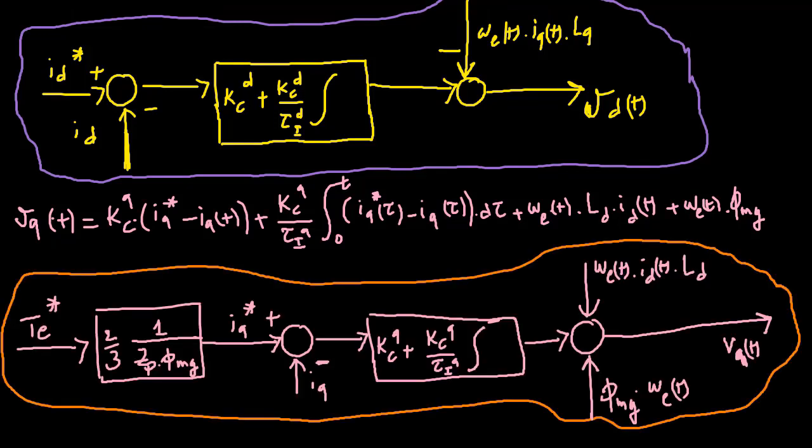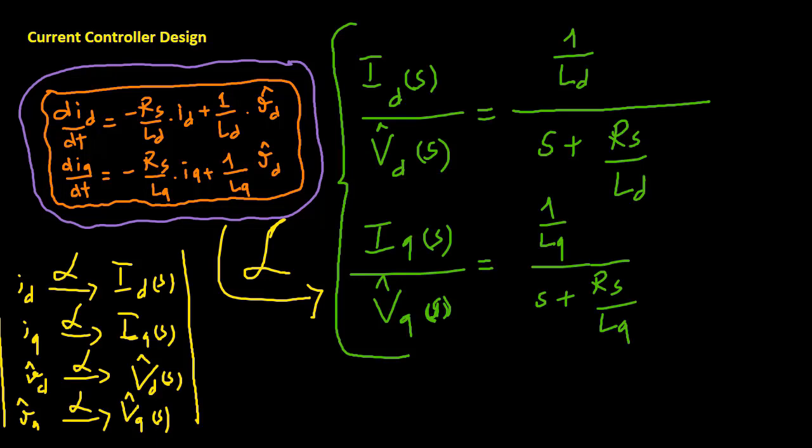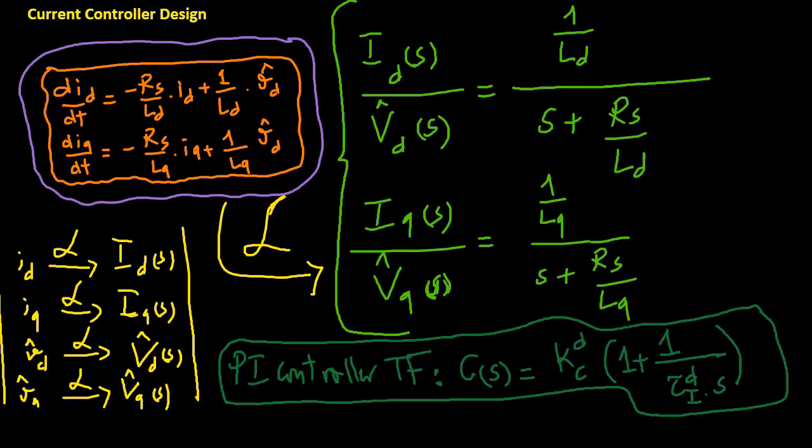Similarly, this figure illustrates the PI controller structure for controlling the electromagnetic torque using non-linear feed forward compensation. Using the first order models for the electrical part of the machine dynamics, the Laplace transfer functions are obtained. Transfer function of the PI controller for the d-axis current loop has this form.